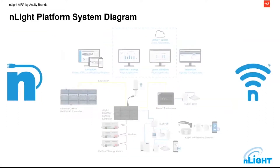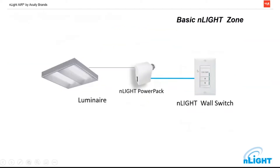Here's a basic overview of the entire system — we're going to deep dive into one or two parts of it. A very basic nLight zone consists of a switch, a power pack, and a light fixture. We're going to run Cat5 from our switch to our power pack, and then wire out from our power pack to the luminaire itself. Very basic, and we can scale.